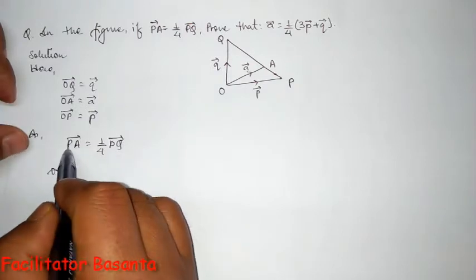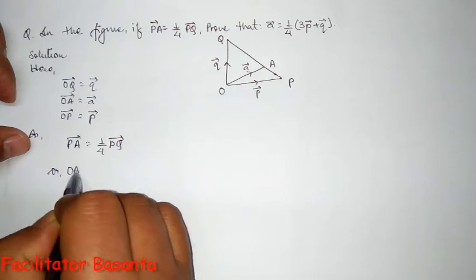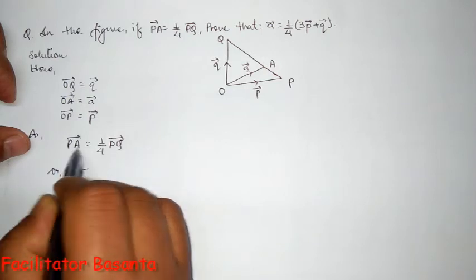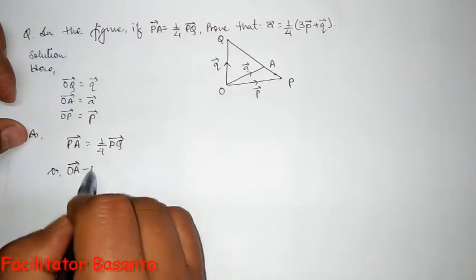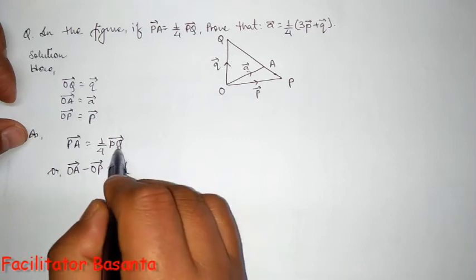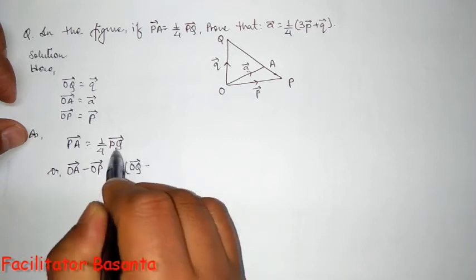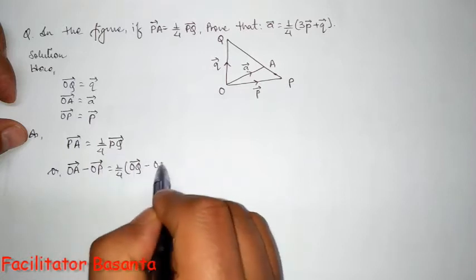terms of position vector, PA vector can be written as the terminating point's position vector minus the position vector of initial point. Same in PQ vector: terminating point is Q, it means OQ minus starting point is P, it's...